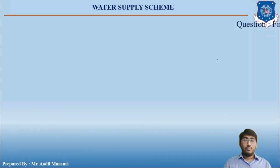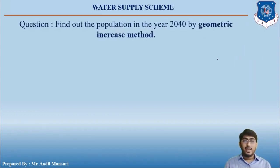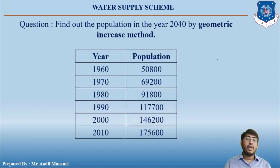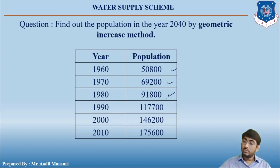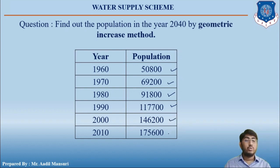Let us now solve a numerical. Find out the population in the year 2040 by the geometrical increase method. The given data is: 1960 – 50,800; 1970 – 69,200; 1980 – 91,800; 1990 – 1,17,700; 2000 – 1,46,200; and 2010 – 1,75,600.